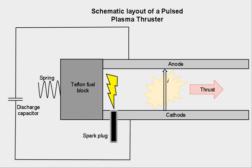A pulsed plasma thruster, PPT, also known as a plasma jet engine, is a form of electric spacecraft propulsion. PPTs are generally considered the simplest form of electric spacecraft propulsion and were the first form of electric propulsion to be flown in space, having flown on two Soviet probes, ZON-2 and ZON-3, starting in 1964.